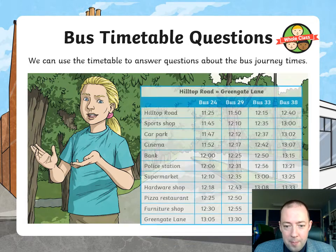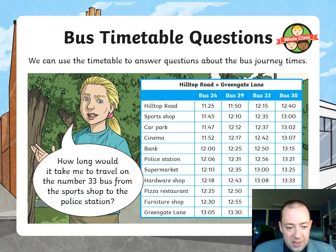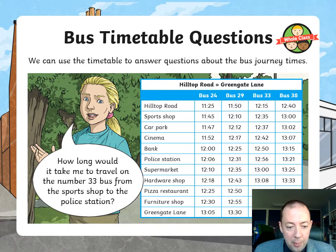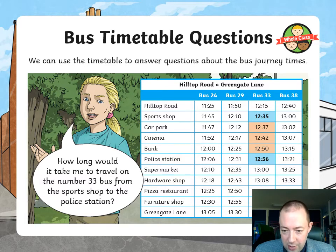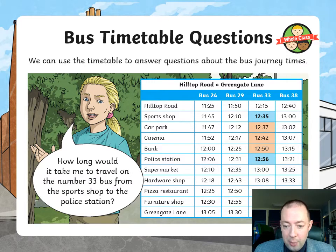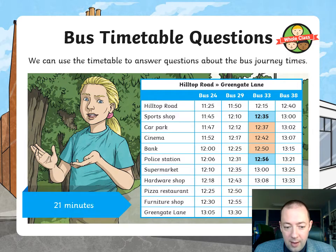Here's another one. How long would it take me to travel on the number 33 bus from the sports shop to the police station? You've started at 1235 and then you're going to the police station. Count on to 1256 when we finish at the police station — that would take 21 minutes.